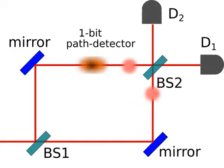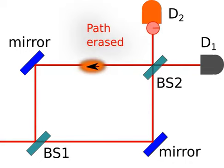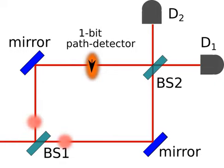So, it is the particle registering at D1 or D2 which erases the which path information, and not the reading out of the path detector states later.